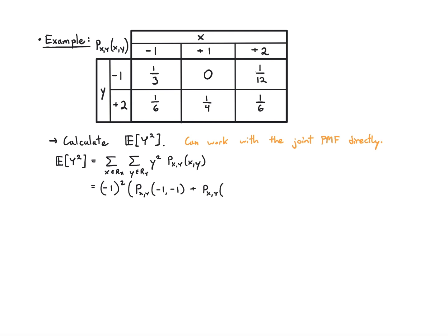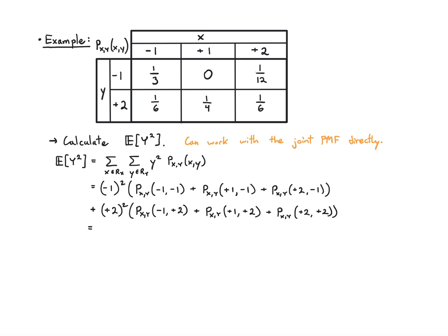For entries corresponding to y equals minus one, I have minus one squared times the joint PMF at (−1,−1), plus the joint PMF at (+1,−1), plus the joint PMF at (+2,−1). Similarly for y equals plus two, I have the joint PMF at (−1,+2), (+1,+2), and (+2,+2), all multiplied by y squared. That works out to one-third plus one-twelfth plus four times one-sixth plus one-fourth plus one-sixth, all over 12 — giving four plus one plus eight plus twelve plus eight, all divided by 12 — so 33 over 12, which is 11 over 4.